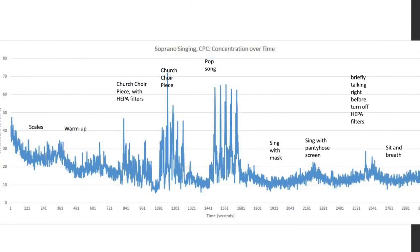Here is the same chart but it's for soprano singing. You can see from left to right that the scales and the warm-up are kind of low. But then when you get to a church choir piece and there's a higher note in there, it is a higher concentration. Pop singing may require more air, different types of notes, different accentuation of particular notes. At the end on the right-hand side of the screen you can see singing with a mask and how the actual concentration goes lower, compared to a pantyhose screen and just sitting there and breathing.